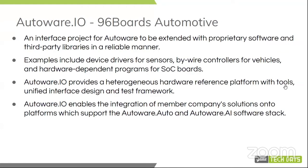Moving on to what's new. Autoware.io, which 96 Boards Automotive will be a part of, arose as an interface project for Autoware, since Autoware AI and Autoware Auto were focusing on the software stack. Autoware.io is the bucket for all the other things — proprietary sensor drivers or proprietary code that some companies would like to share and integrate with Autoware, drivers for sensors, computing units, hardware reference platforms, and interface and test frameworks. It would also allow any company to integrate within Autoware.